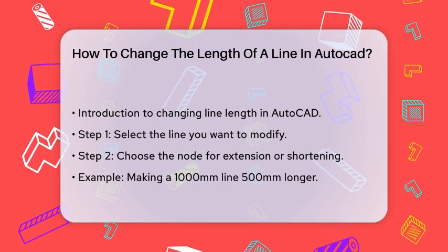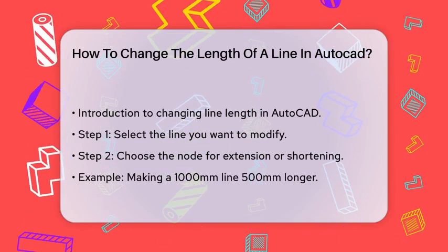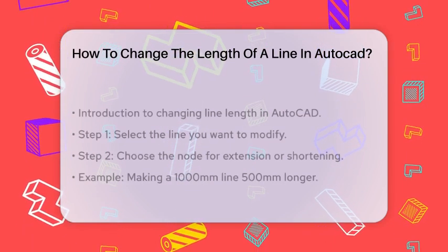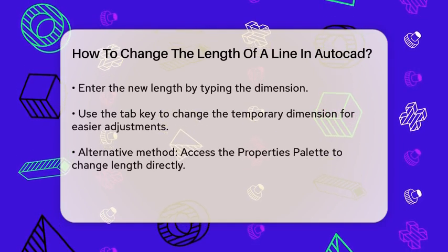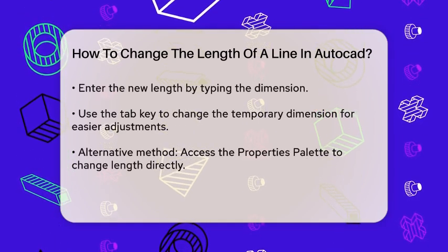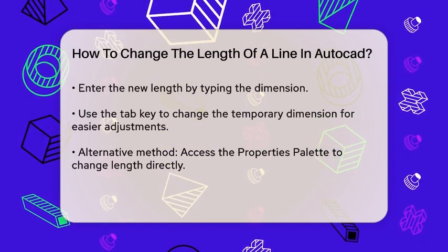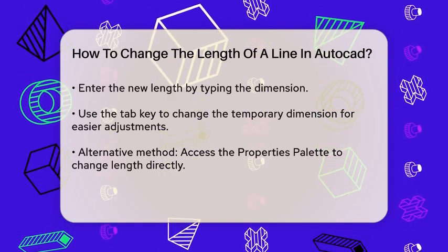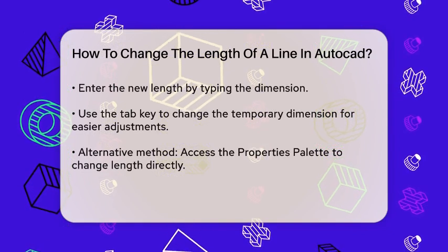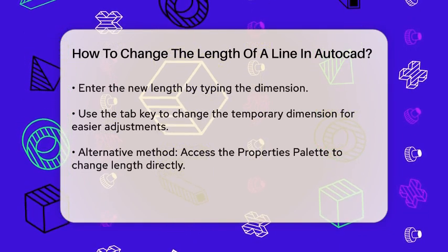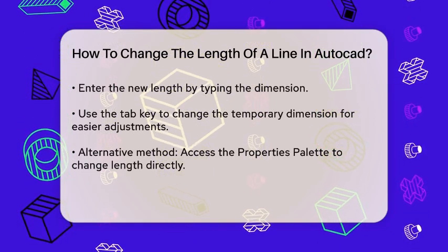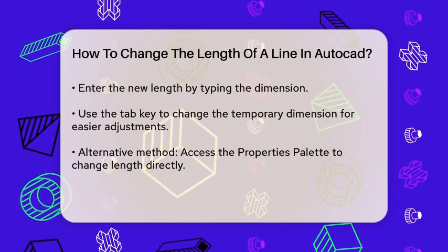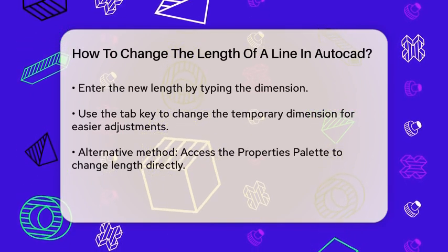Now here's where it gets a bit more detailed. To enter the new length, you can simply type in the new dimension. However, if you're looking to change the line to a specific total length — like changing a 1230 line to a 3000 line — there's a trick to make it easier. When you're about to change the length, hit the Tab key. This will allow you to change the temporary dimension displayed over the line, making it simpler to set the exact length you need.